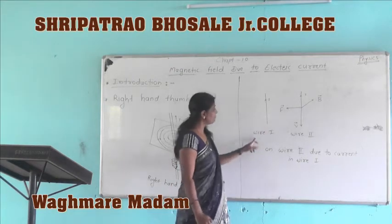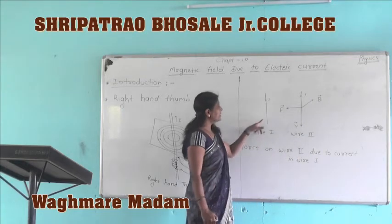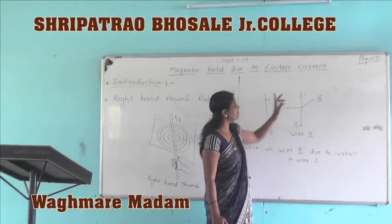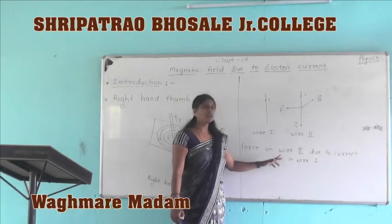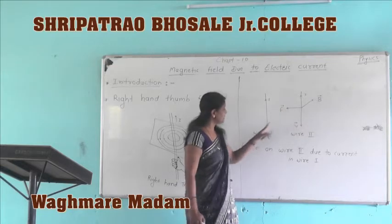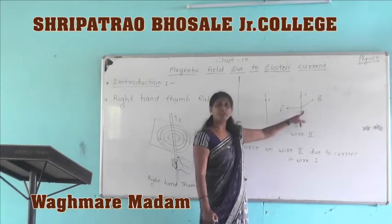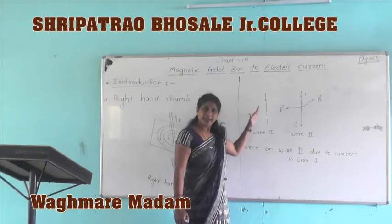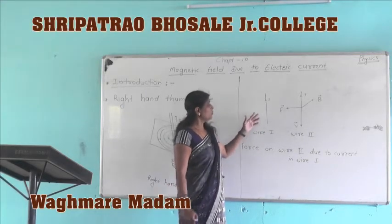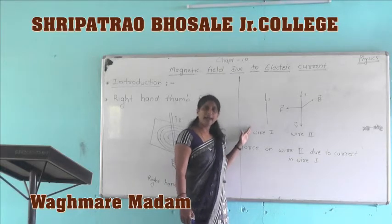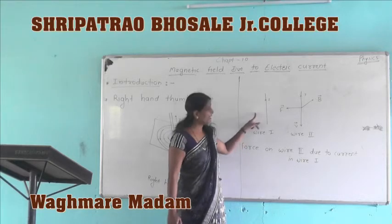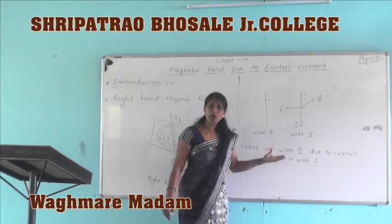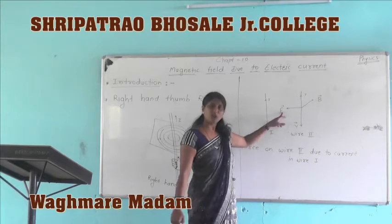Suppose this is wire first and this is wire second, and current I is passing through each wire. We need to find the magnetic force on wire second due to the magnetic field produced by wire first. Wire first produces a magnetic field, and in this magnetic field we place wire second, and we have to find the force or effect of force on wire second.